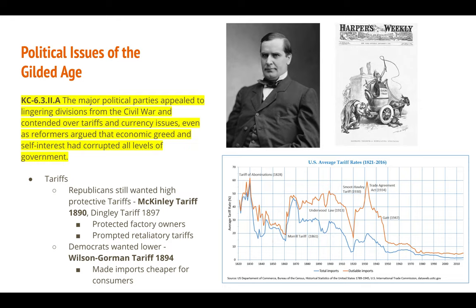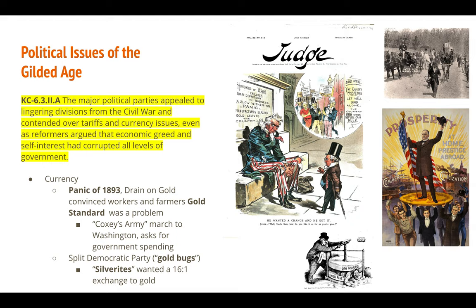There is also a dip between those two high points — that is the Wilson-Gorman tariff of 1894. When Democrats took control of Congress, they lowered the tariff from McKinley-era rates to make products cheaper for areas with less industry. Pictured is William McKinley, after whom the McKinley tariff is named; he later became the Republican presidential candidate in 1896, won that election, and became president.